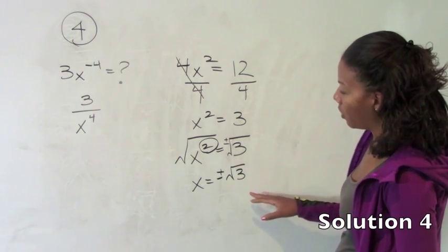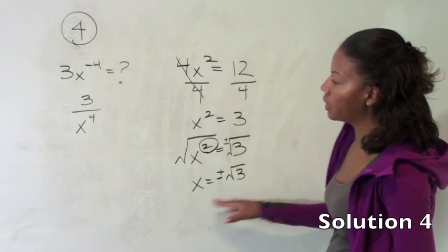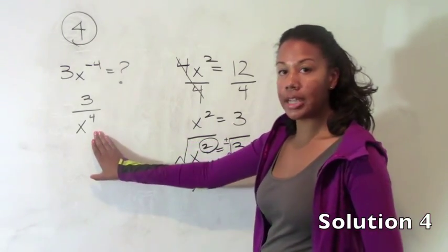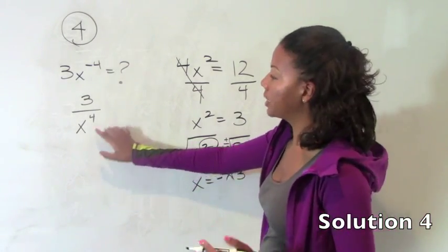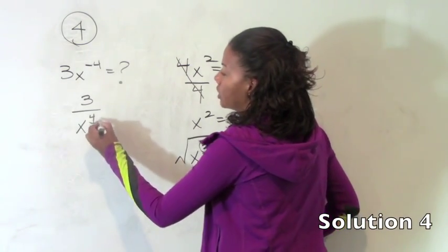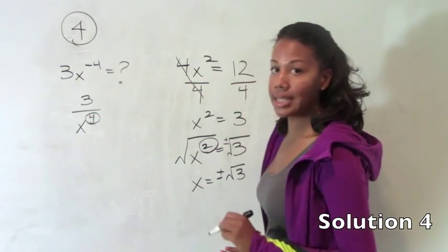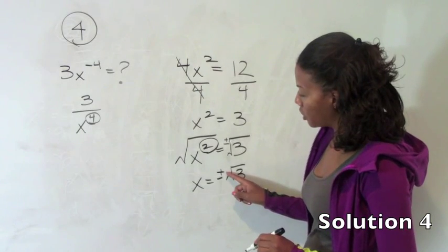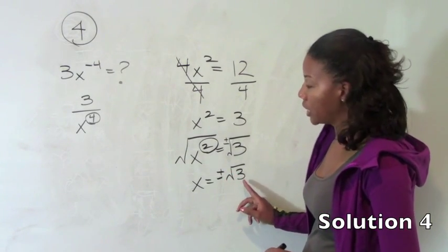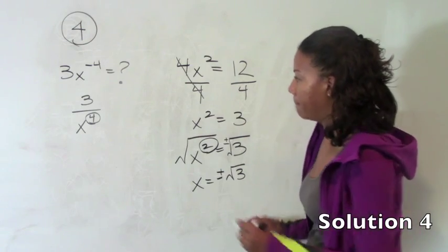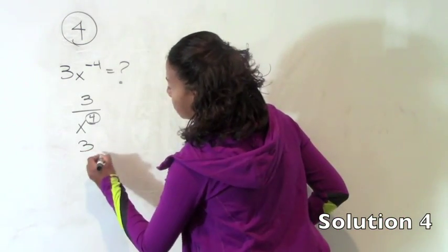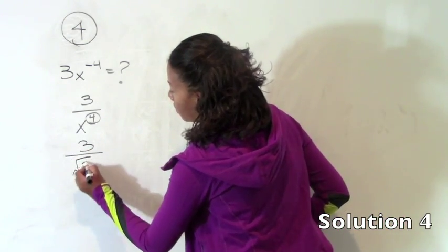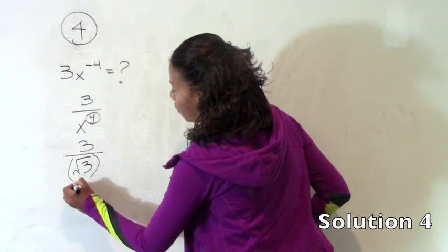So we will start off with positive square root of 3 when we plug it in here. It turns out that if we plugged in the negative, we would get the same thing because we're raising it to an even power. So in this case, it actually doesn't matter whether the square root of 3 is positive or negative. So let's just take the positive version and leave it at that. So this is 3 divided by the square root of 3 raised to the fourth power.